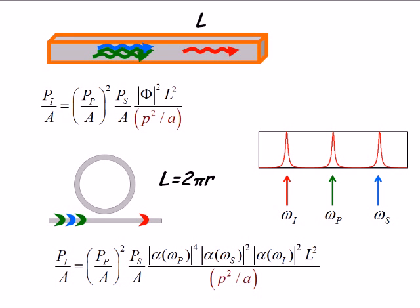And if each one of these alpha squares, of which I have 1, 2, 3, 4 of them, is on the order of a few hundred, I can get a huge enhancement in the ring, in the production of this idler frequency by using a ring rather than a channel of equal length.